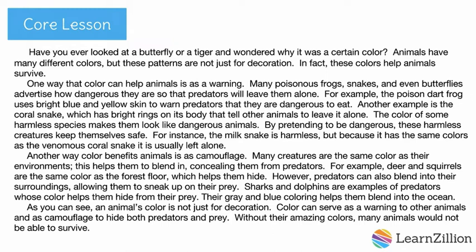Another way color benefits animals is as camouflage. Many creatures are the same color as their environments. This helps them to blend in, concealing them from predators. For example, deer and squirrels are the same color as the forest floor, which helps them hide. However, predators can also blend into their surroundings, allowing them to sneak up on their prey. Sharks and dolphins are examples of predators whose color helps them hide from their prey. Their gray and blue coloring helps them blend into the ocean. As you can see, an animal's color is not just for decoration. Color can serve as a warning to other animals and as camouflage to hide both predators and prey. Without their amazing colors, many animals would not be able to survive.